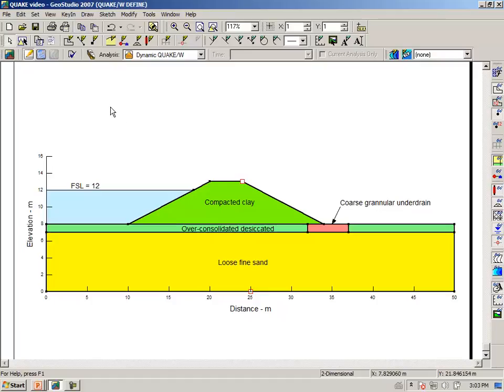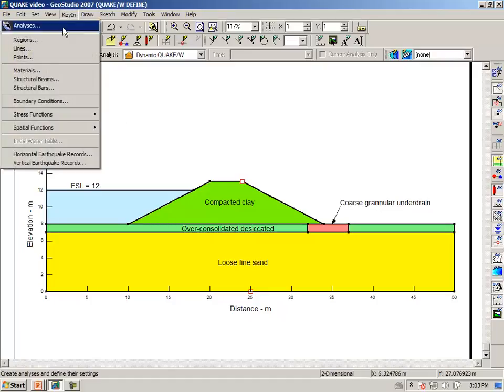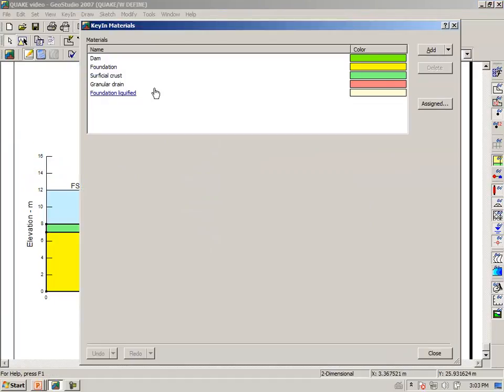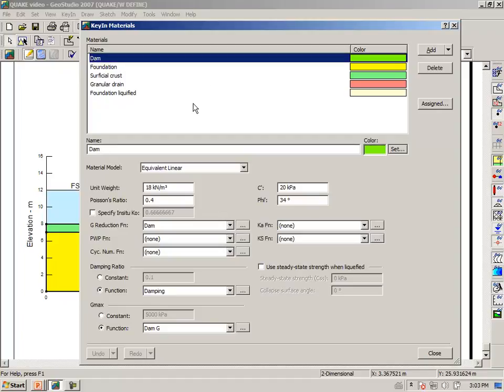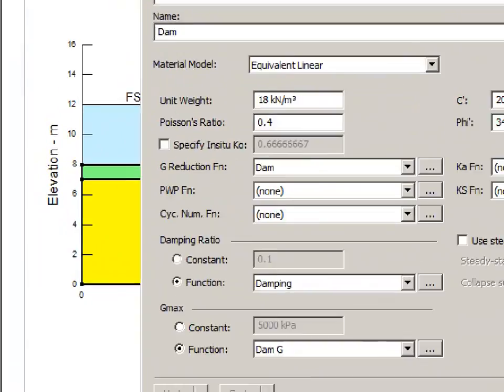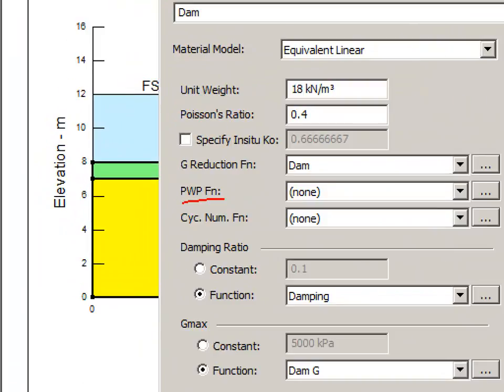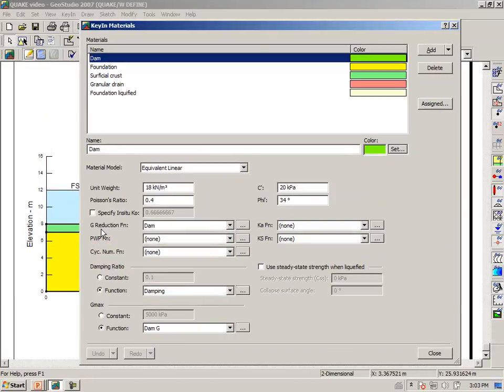We go into our key-in materials. Number one, the dam embankment, we say that the pore water pressure function and the cyclic number function is none.